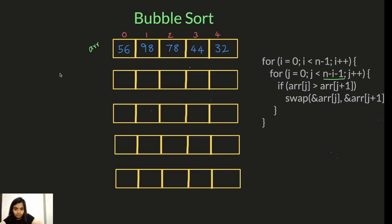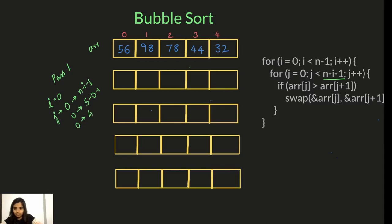Now let's do a dry run. This is pass one, where i is equal to zero. When i is equal to zero, j runs from zero all the way through n minus i minus one — so from zero to five minus zero minus one, which is four. So j will run from zero to four. First we compare these two: is 56 greater than 98? No, so I will write them as they are — 56, 98.